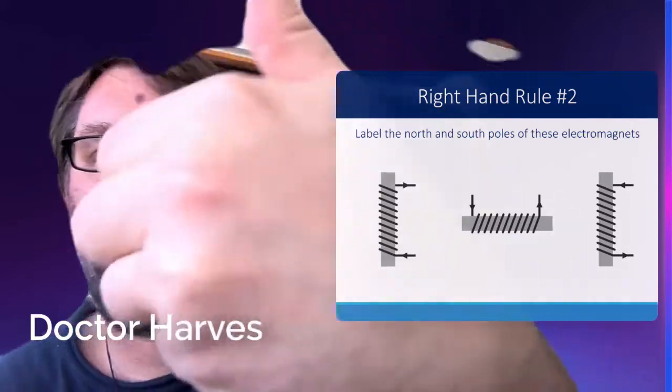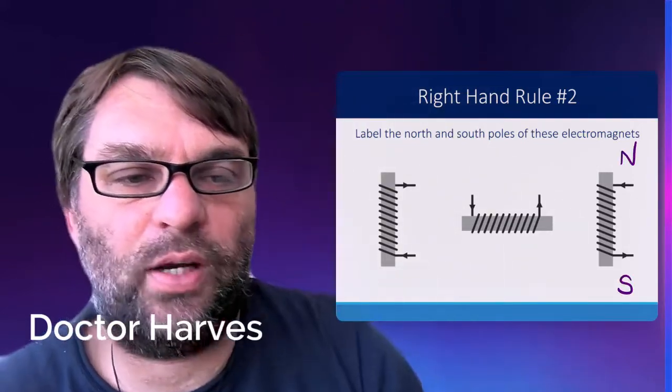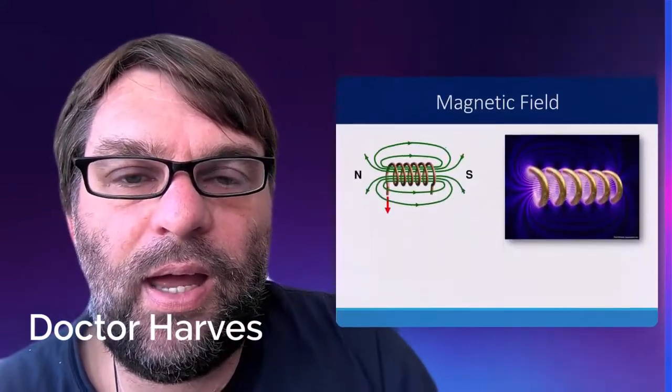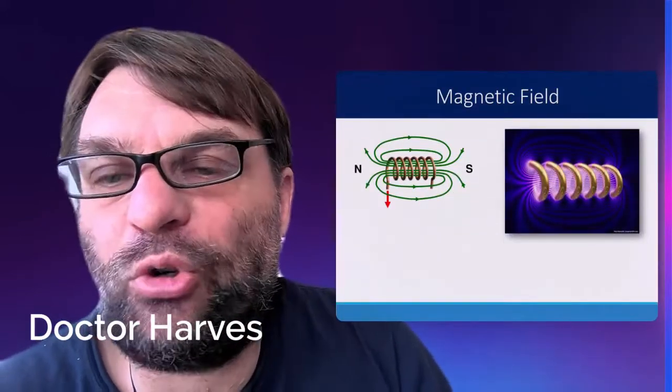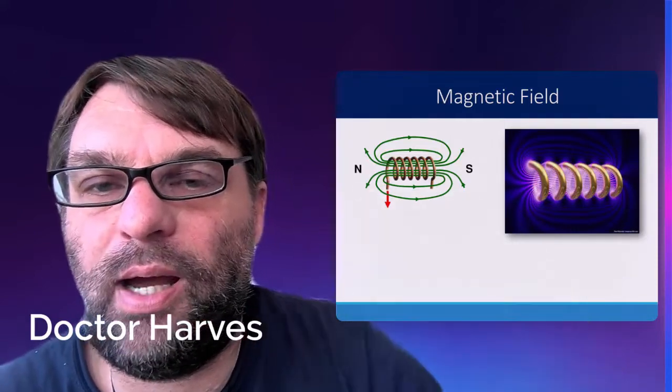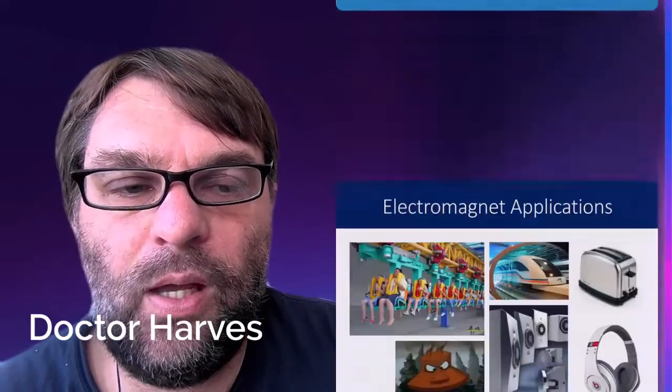And the final example is that, going that way, that means the north pole is in that direction. And that's just examples of the magnetic field created by something called a solenoid, which is the coiled wires.